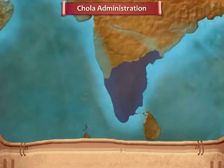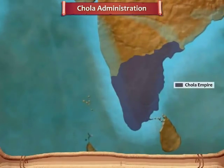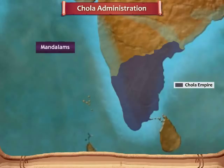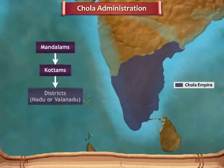The empire was divided into mandalams. The mandalams were further divided into kuttams, districts called Nadu or Valanadu, and villages called Urz.